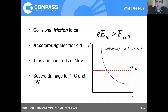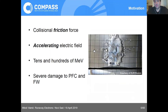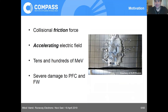When you have many runaway electrons they can carry a lot of current, a lot of magnetic energy and kinetic energy, and when they hit the wall they can cause severe damage to plasma-facing components and the first wall. The picture on the right, taken from JET, shows where runaway electrons literally melted steel. This happened when the ITER-like wall was introduced to JET and, while never 100% proven, runaway electrons are the main suspects.